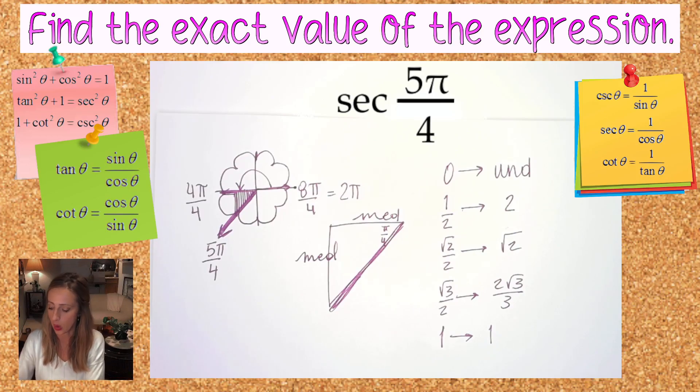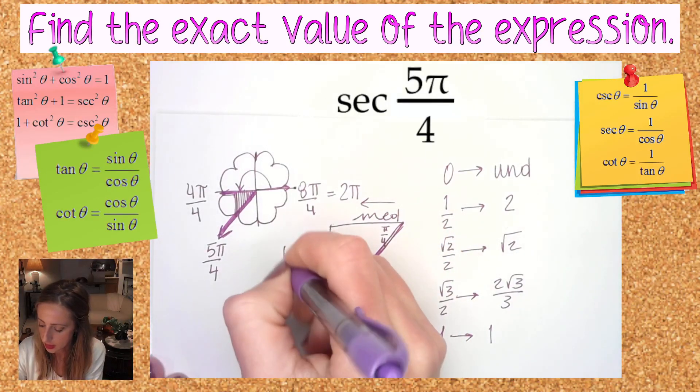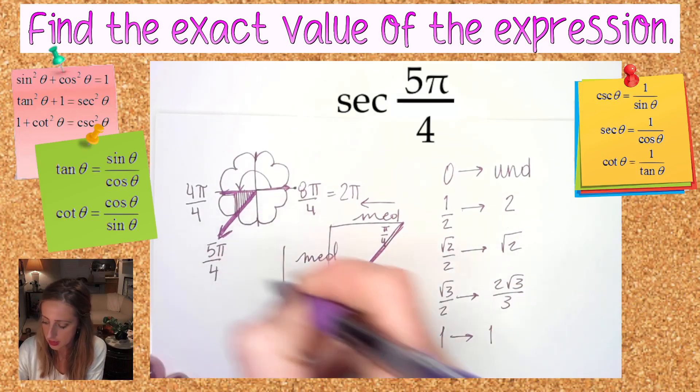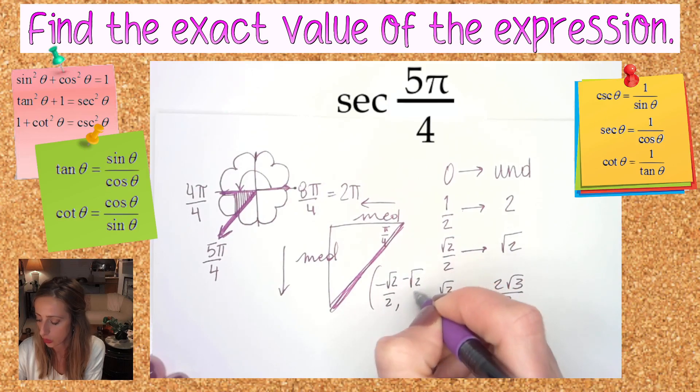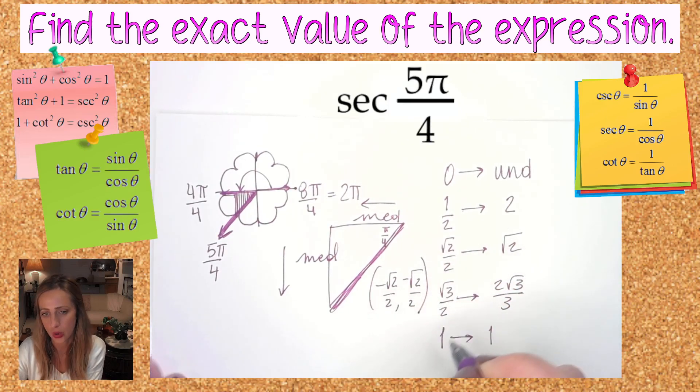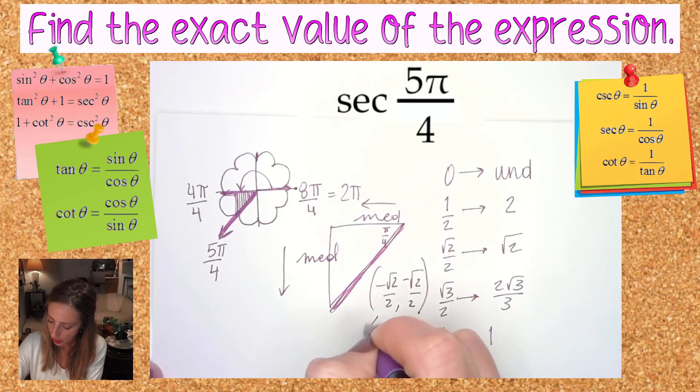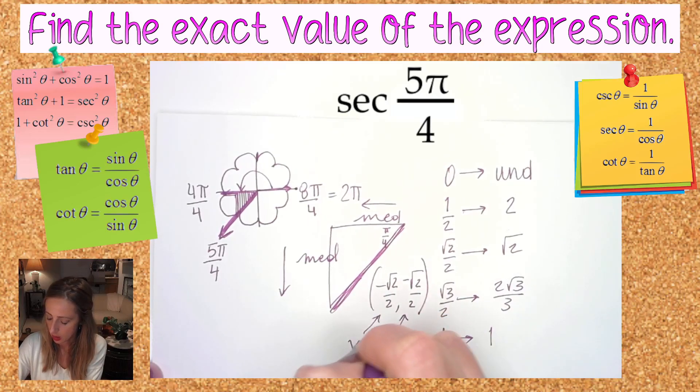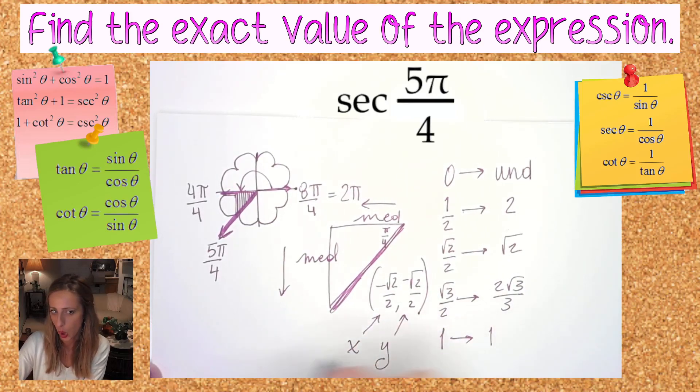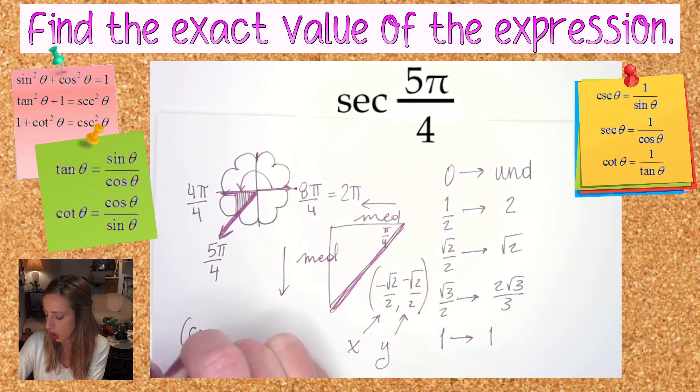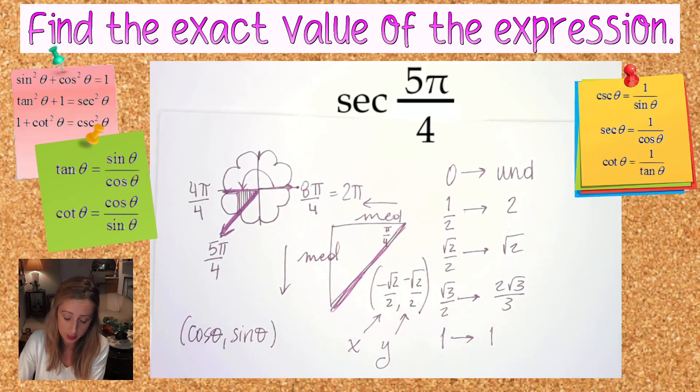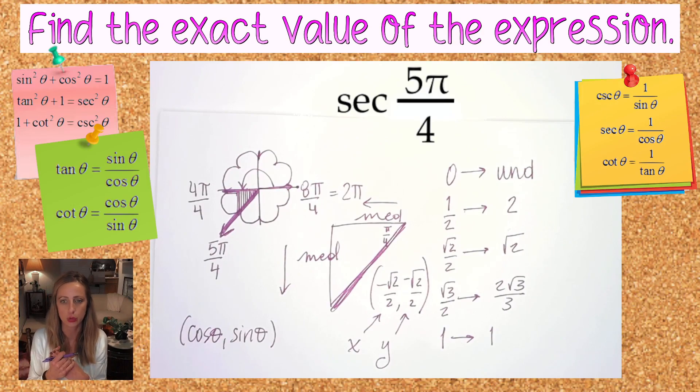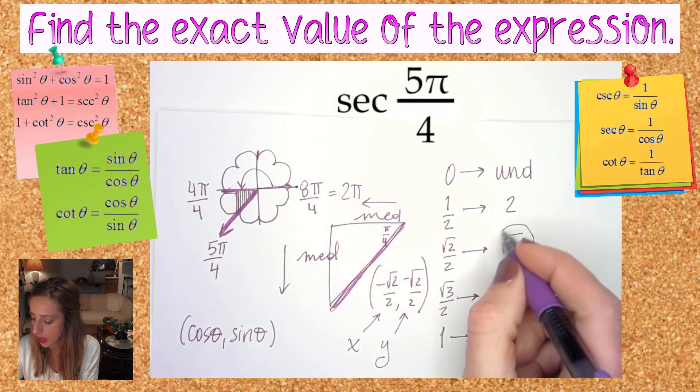Left medium, down medium. That means I went left root two over two for the x value and I went down root two over two for the y coordinate. X, Y. Hopefully we all know x is corresponding to cosine, y is corresponding to sine. That means they're both the same in this case, but that means cosine is negative root two over two, which means that secant will be the reciprocal.